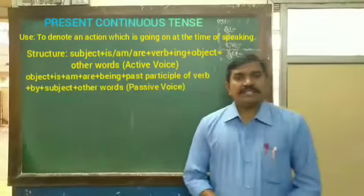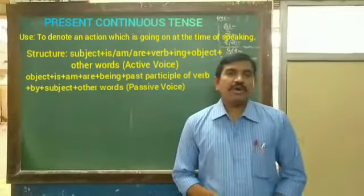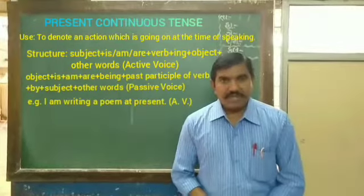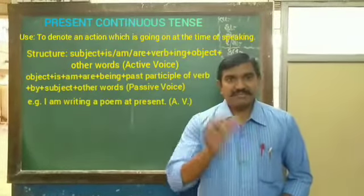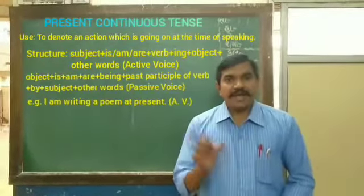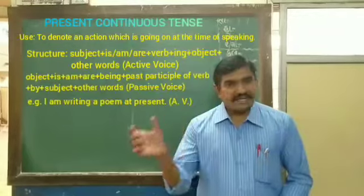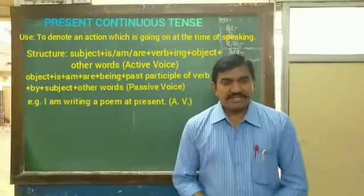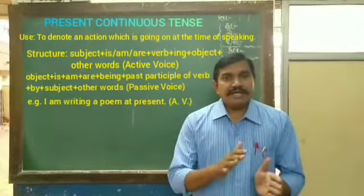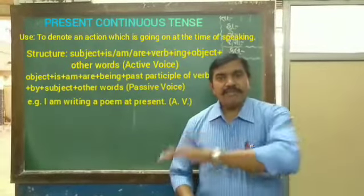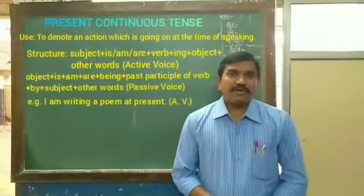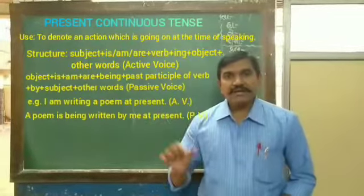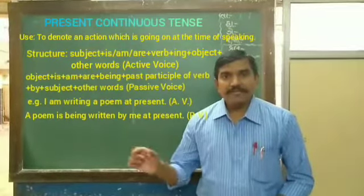Active example: 'I am writing a poem.' Here, 'a poem' is the object. In the passive voice, this becomes: 'This poem is being written by me.'